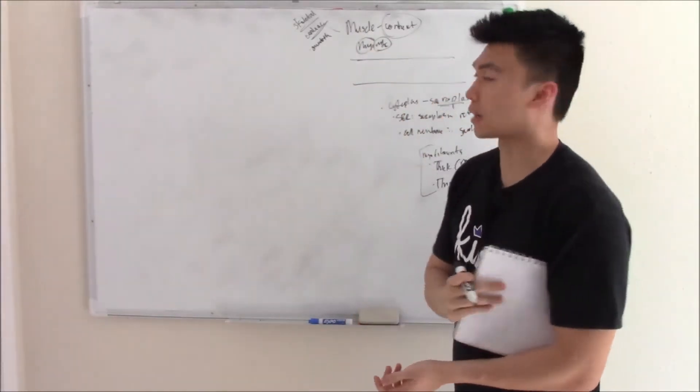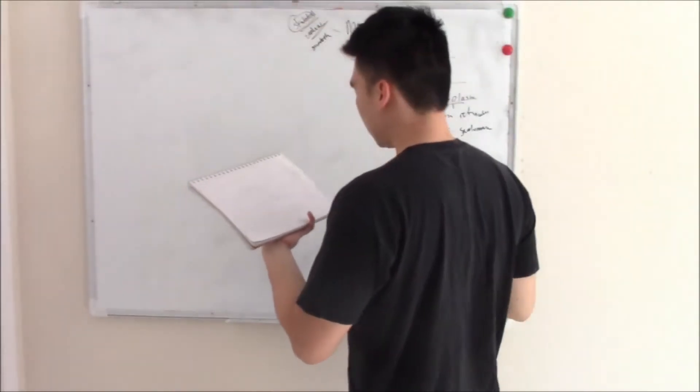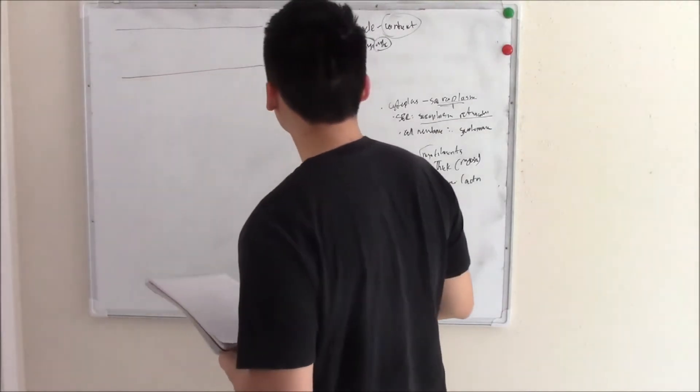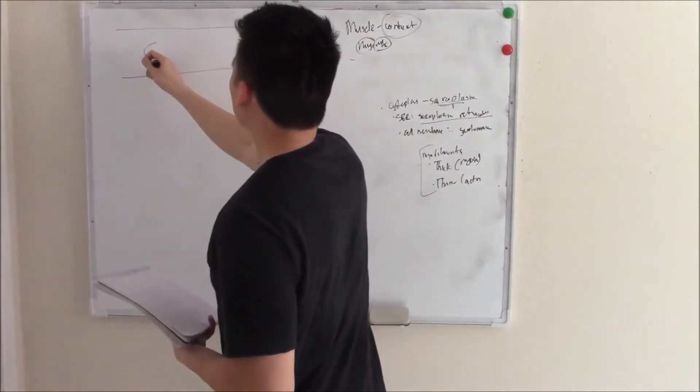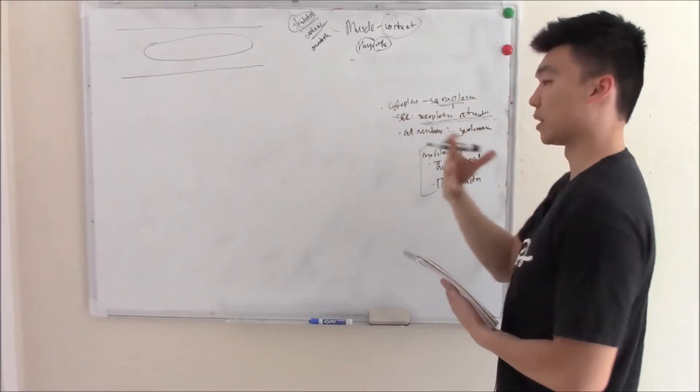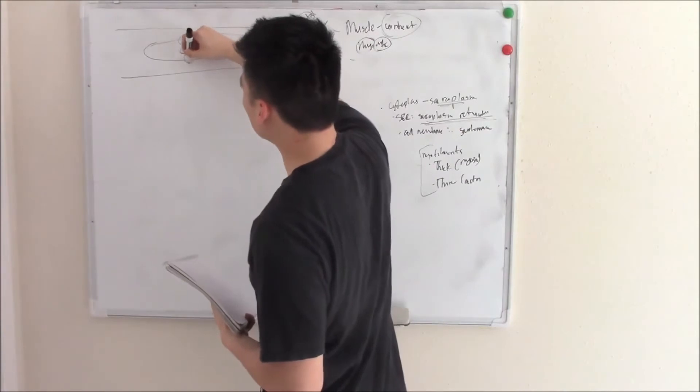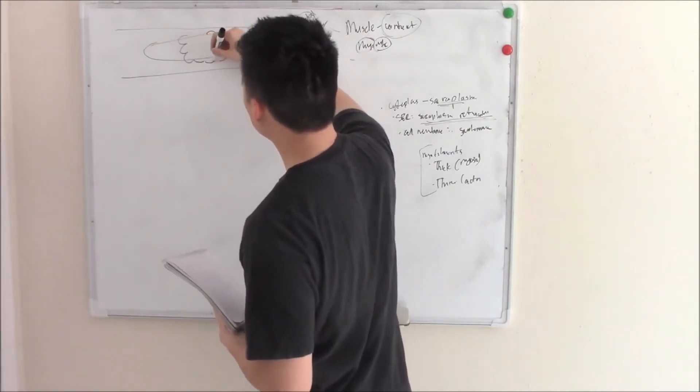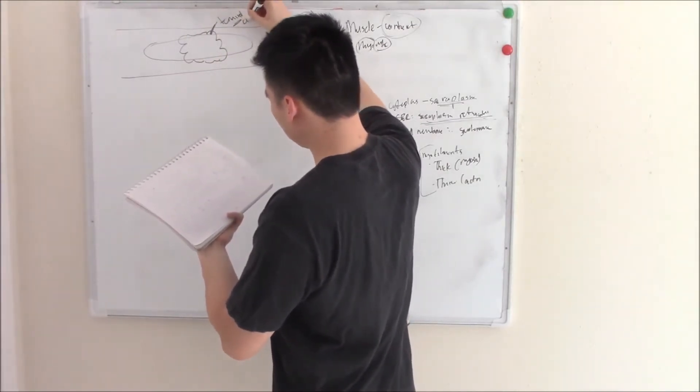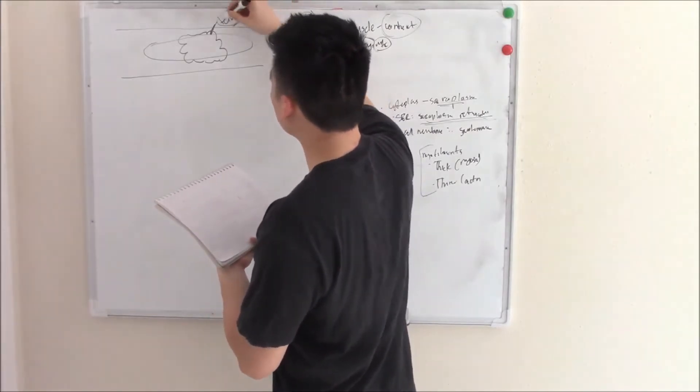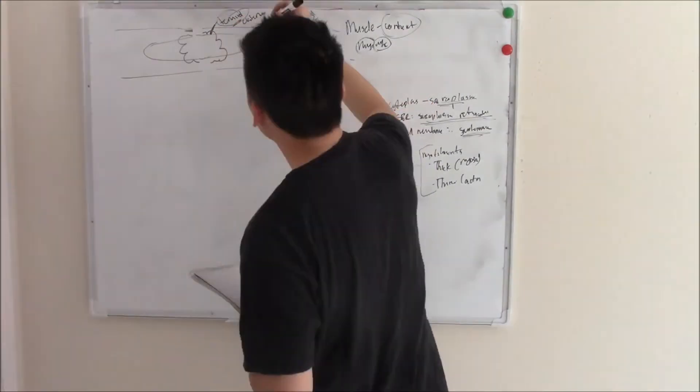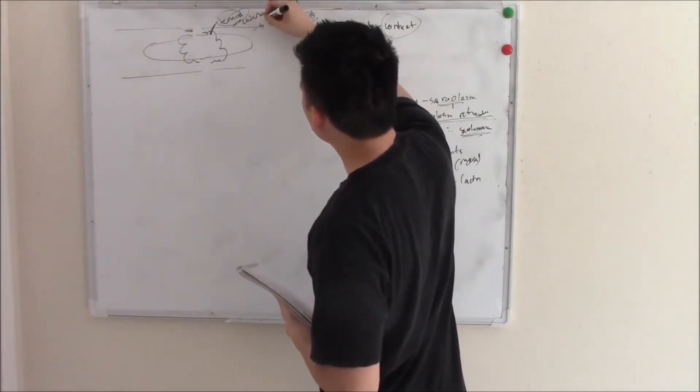Now let's see how they contract. We'll start with skeletal first. You have these long protein cords, and those are what contract. Your sarcoplasmic reticulum will form a net around these cords, with little dilated ends called terminal cisternae.